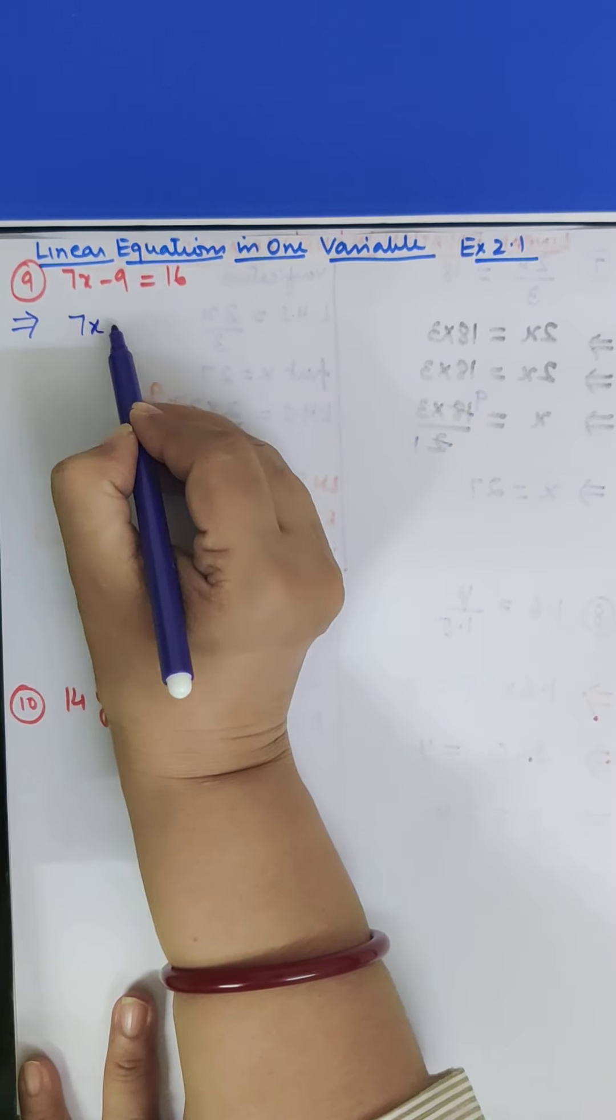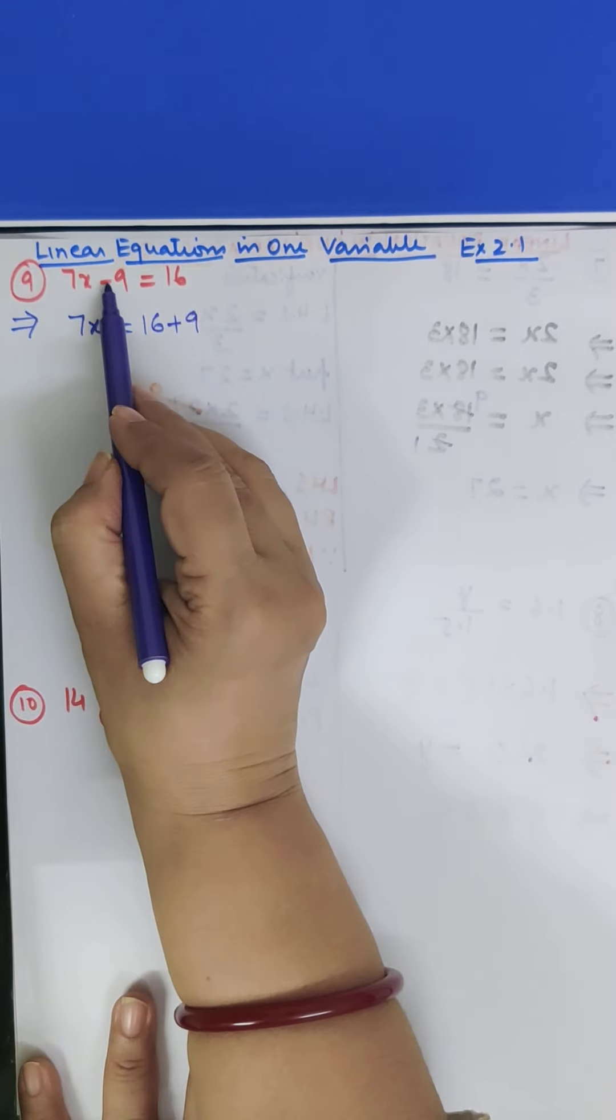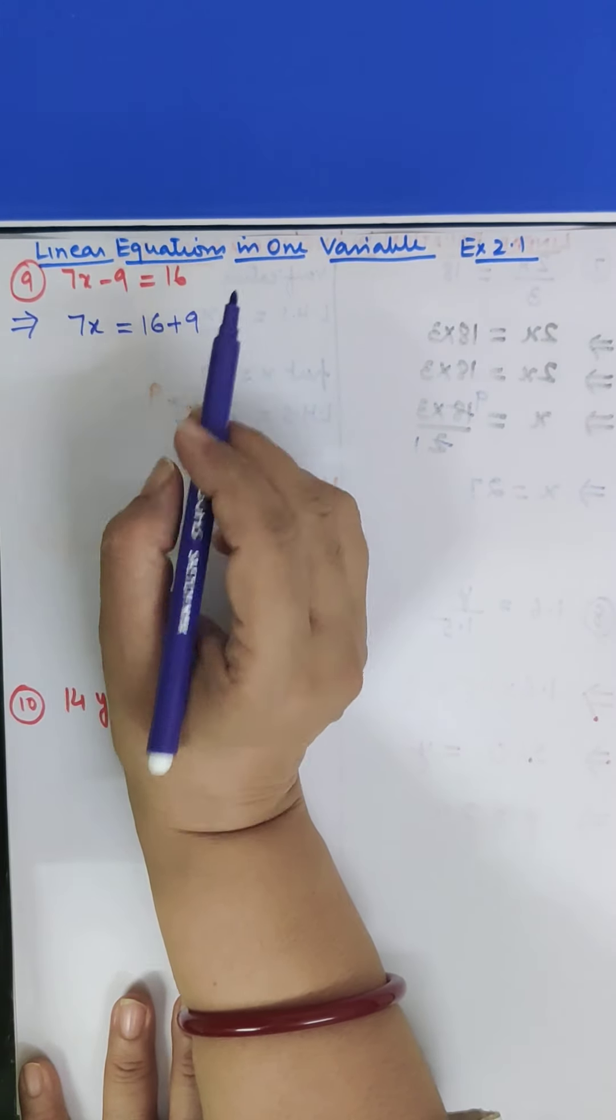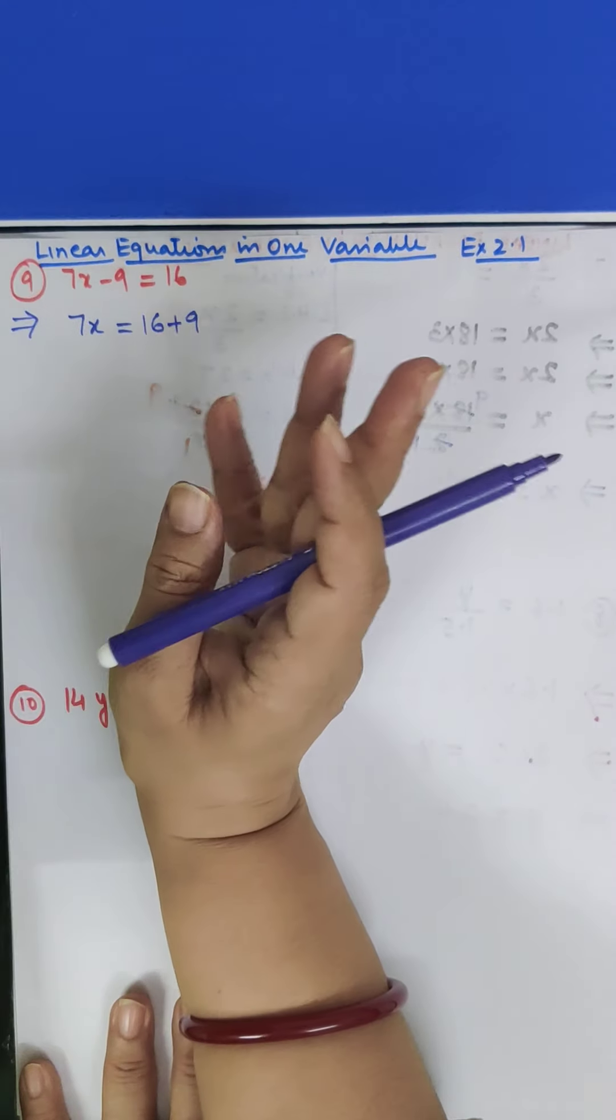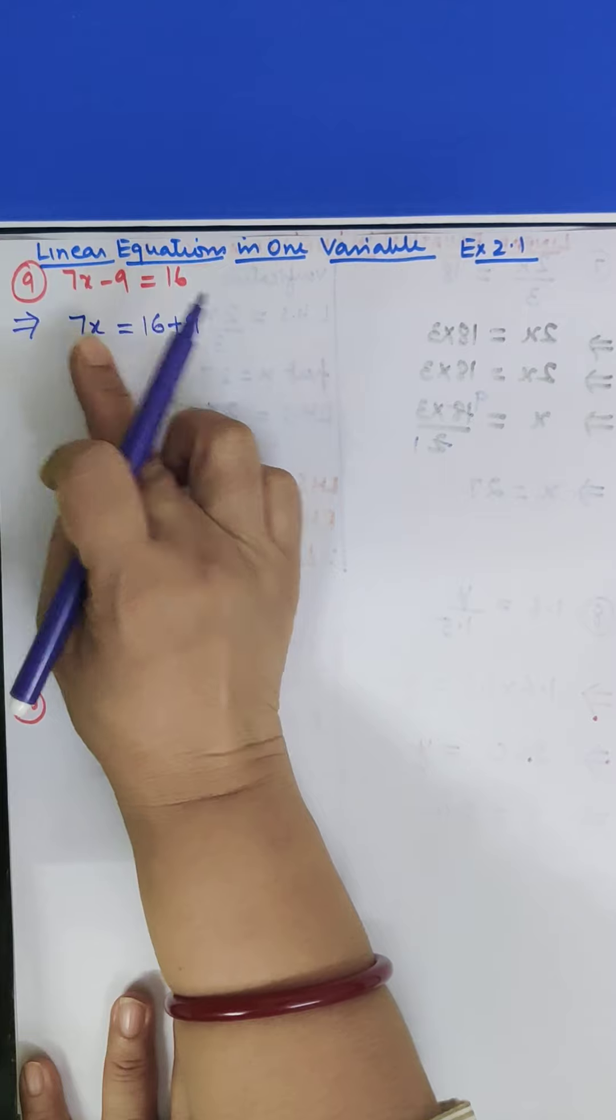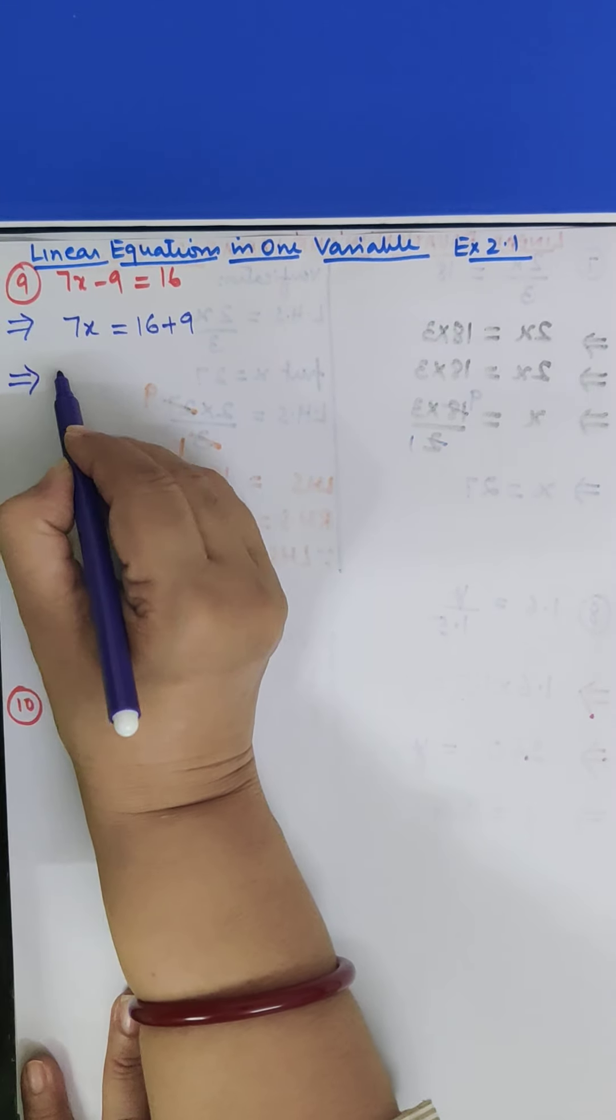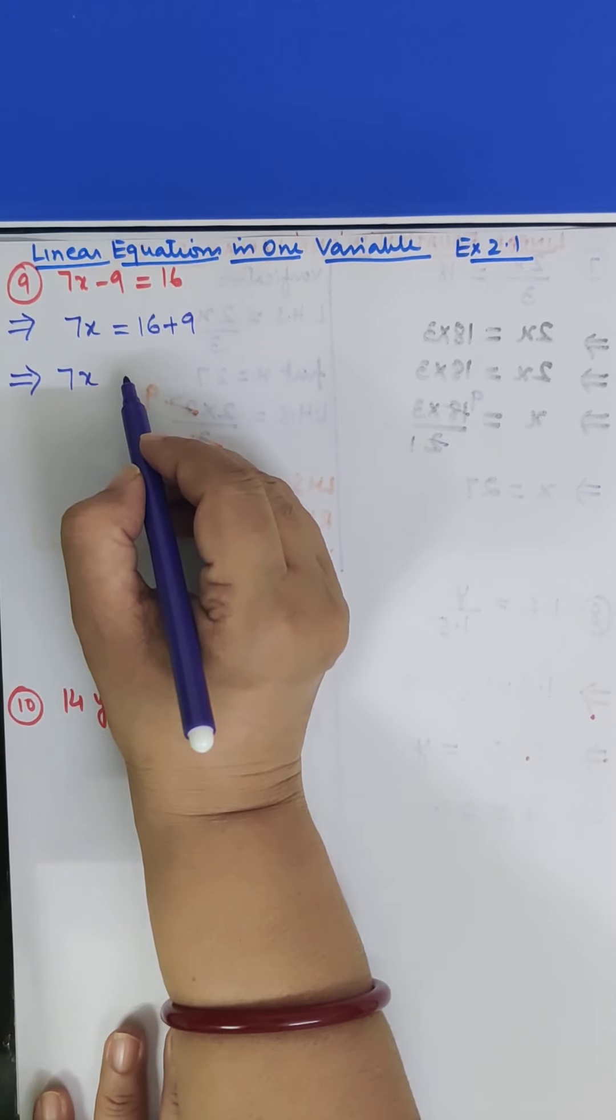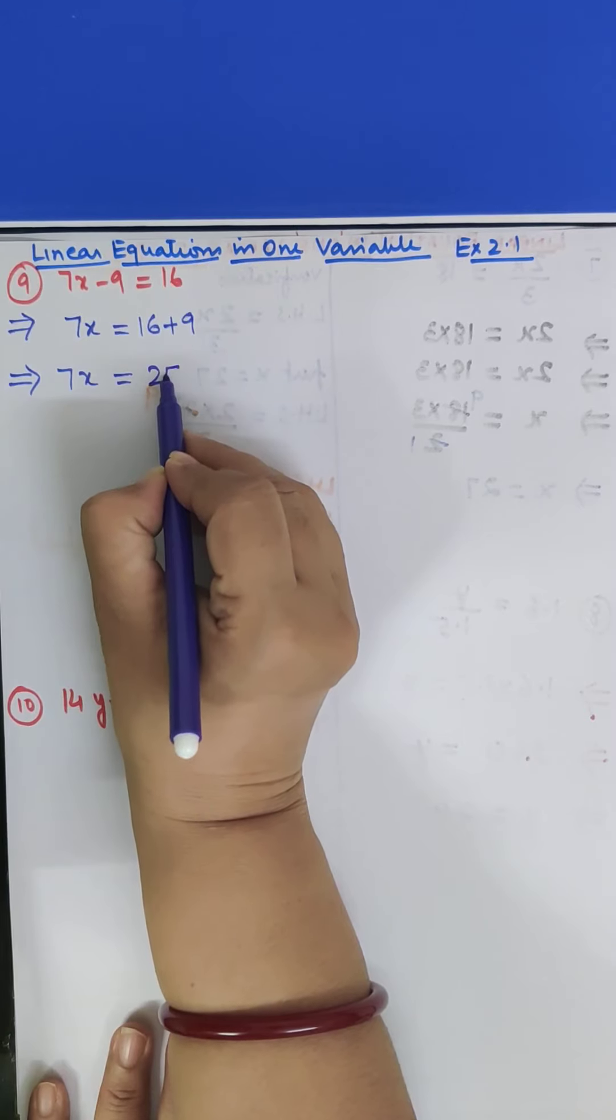So we have 7x is equal to 16 plus 9. Now, why did I shift 9? Because we have like terms. X-value terms is one direction and without x-value terms is one direction. So this x-value was here and the other is here. So this implies that 7x is equal to 16 plus 9. 16 plus 9 is 25.